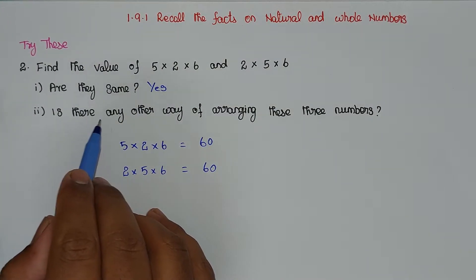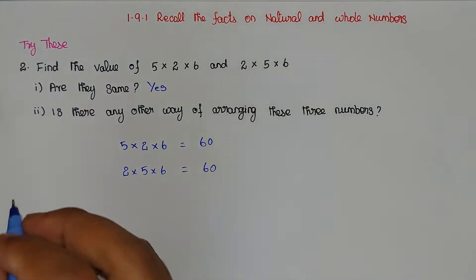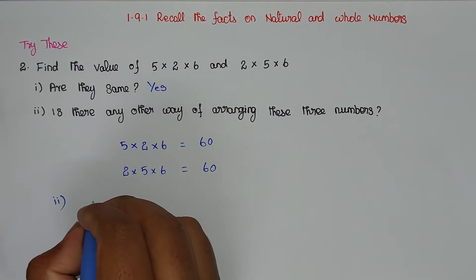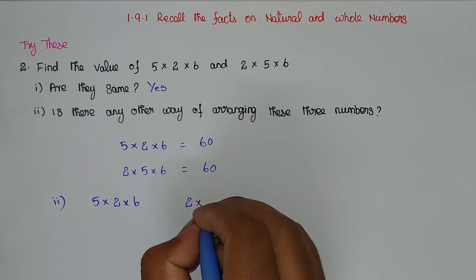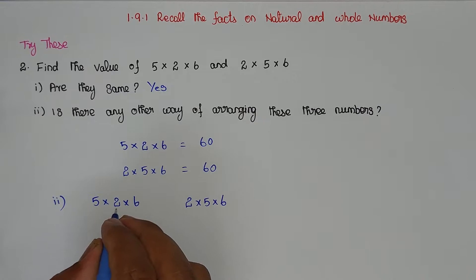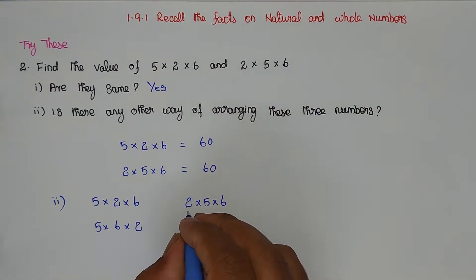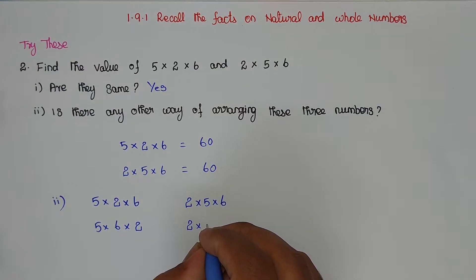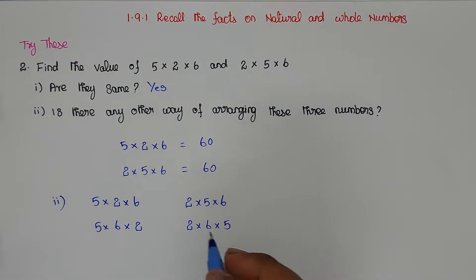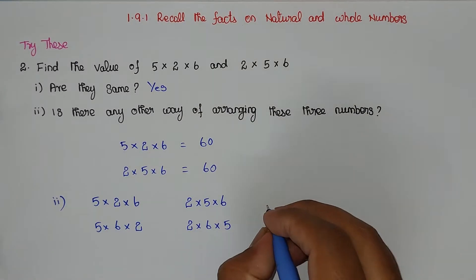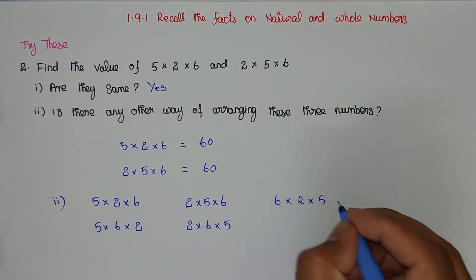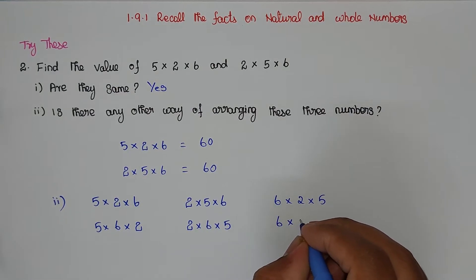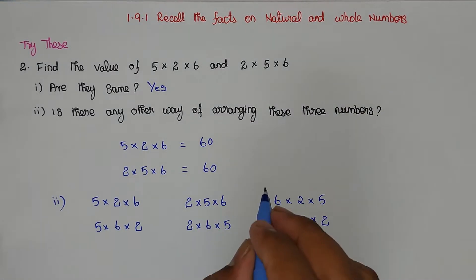Second part: is there any other way of arranging these 3 numbers — 5, 2, and 6? Yes. We have 5 into 2 into 6, and 2 into 5 into 6. With 5 fixed, swap the other two: 5 into 6 into 2. With 2 fixed: 2 into 5 into 6 and 2 into 6 into 5. With 6 fixed: 6 into 2 into 5 and 6 into 5 into 2. So there are 6 different ways to arrange 3 numbers.